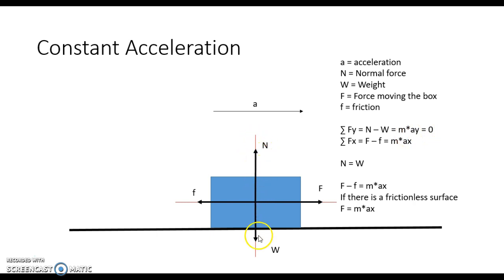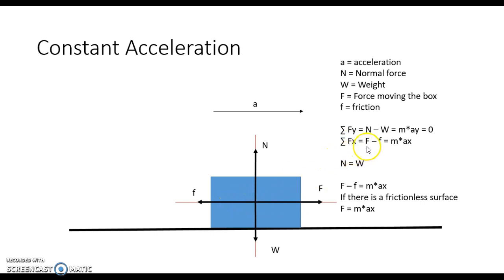Because the box is not moving in the y direction, the acceleration in the y direction is equal to zero, which means our normal force and weight have to be equal to each other. For our forces in the x direction, we have the applied force pushing to the right (positive) and friction acting in the opposite direction (negative). Summing both gives us F minus f equals m times a_x.